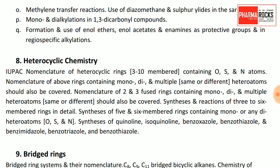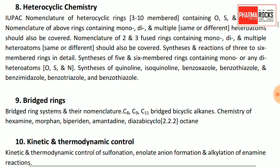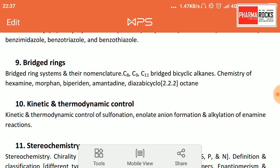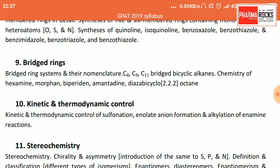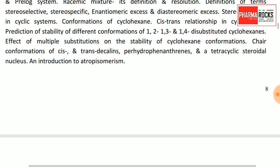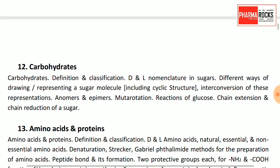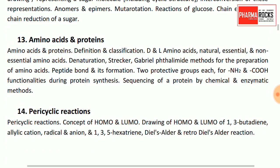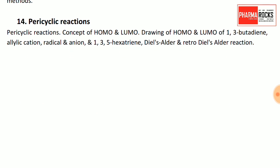Next is heterocyclic chemistry — heterocyclic rings containing oxygen, sulfur, and nitrogen atoms, for example furan and pyridine. Then bridged ring systems and nomenclature, kinetic and thermodynamic control, stereochemistry (very important), carbohydrates, amino acids and proteins, pericyclic reactions, and the concept of HOMO and LUMO.